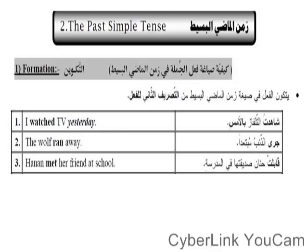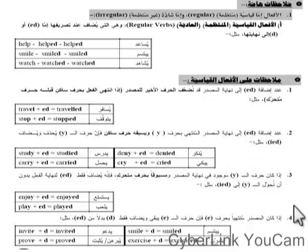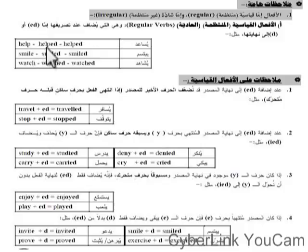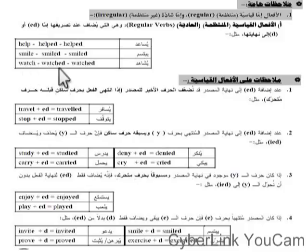تعال نشوف مع بعض بيكون إزاي، إيه هي الصيغة بتاعته. أولاً، لو بيجي مع الأفعال المنتظمة اللي بنسميها regular، بنحط في نهاية الفعل ed أو d أو ied. زي help — من الفعل help في الـ present، في الـ past بتاخد ed فبتبقى helped. وفعل زي smile — بياخد d في النهاية فبتبقى smiled. وwatch يشاهد بقى watched، بتاخد في الآخر ed.